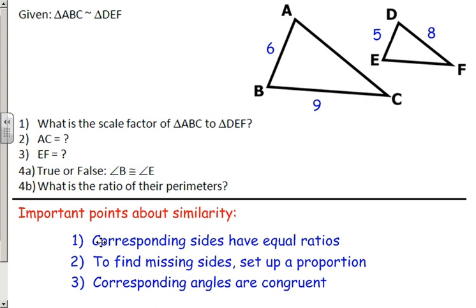The first question asks for the scale factor of triangle ABC to triangle DEF. Scale factor simply means the ratio between corresponding sides. Looking at the picture, AB corresponds to DE — AB is 6, DE is 5 — so the scale factor is 6 to 5, or written as a fraction, 6 over 5. If the fraction were reducible, like 6 over 4, you'd take out the greatest common factor and reduce accordingly. That scale factor is what we use to find missing sides.